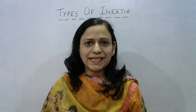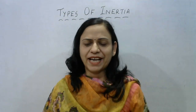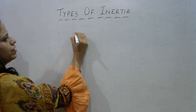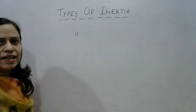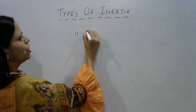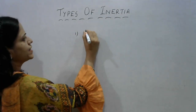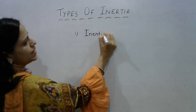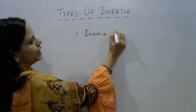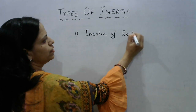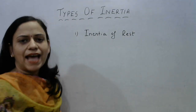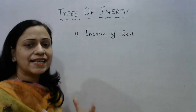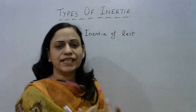Inertia is basically of three different types. The first one is known as the inertia of rest. When we say inertia of rest, it means the tendency of an object to stay at rest — that is, the tendency of an object to resist a change in its state of rest.